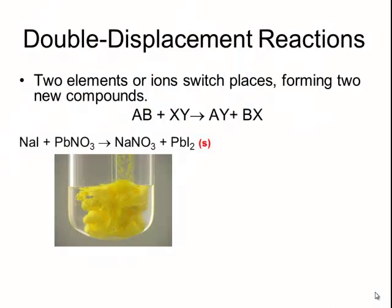An example of this is when sodium iodide and lead nitrate are mixed together. Now sodium iodide and lead nitrate are both colorless. But when I take these two colorless solutions and mix them together, a bright yellow precipitate of lead iodide forms and a clear solution of sodium nitrate is left over. Notice the pattern: the sodium and the nitrate were on the outsides of the reactants and combined together to form a product, and the lead and the iodine were towards the insides and combined together to make a different compound.